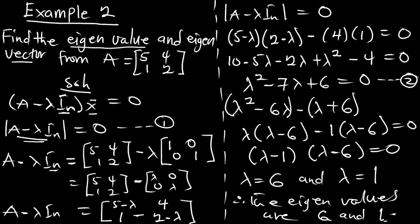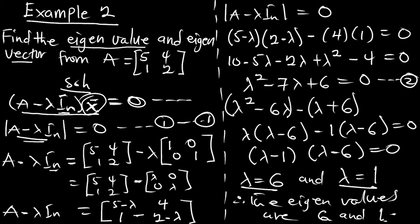Now we have to find the eigenvector. Remember this equation says (A minus lambda I_n) multiplied by the eigenvector equals zero. Since we have two eigenvalues, we are going to use each of them to find the eigenvector — eigenvector for lambda=6 and eigenvector for lambda=1. Let's take the value for lambda=6 first.